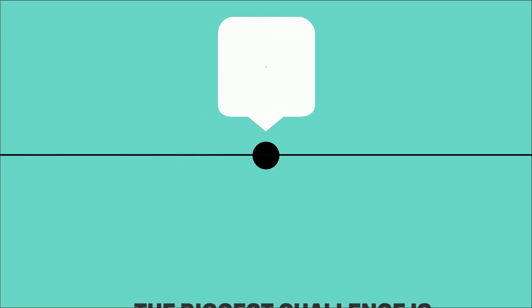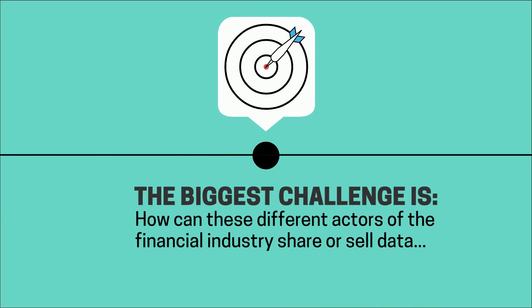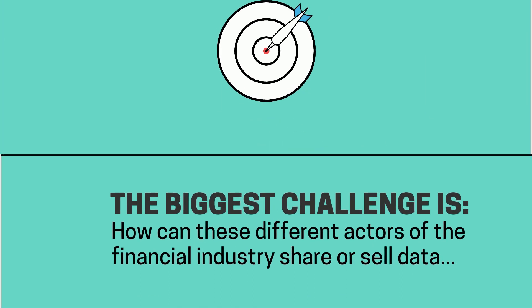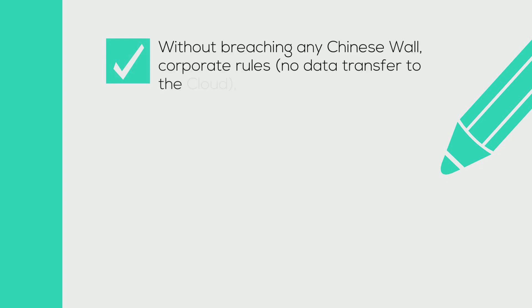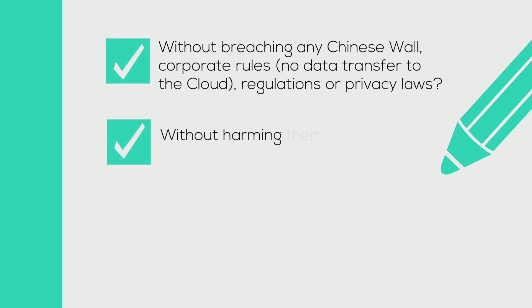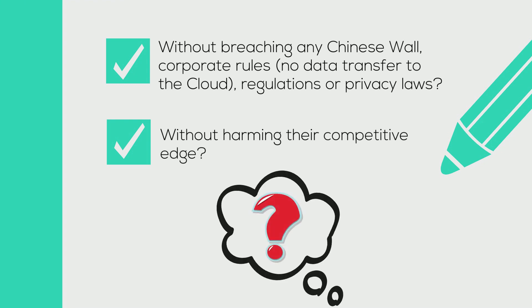How can the different players in finance share and sell data to each other, without breaching any Chinese wall, regulations, or privacy laws? Or without harming their competitive edge?